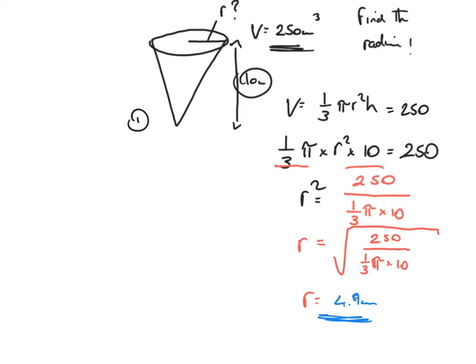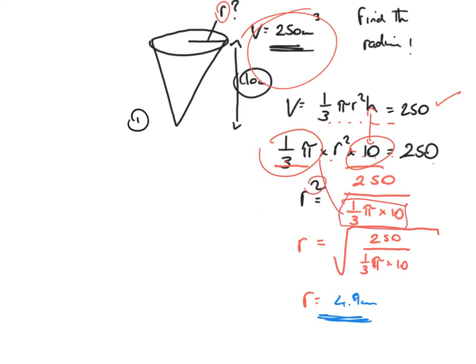Let's go over how that was achieved. The question provides the volume, which is 250, and asks for the radius. The volume formula is one third pi r squared h, equal to 250. Substituting height equals 10 gives one third pi times r squared times 10 equals 250. I divide both sides by one third pi times 10, then take the square root, entering it carefully into the calculator to get 4.9 centimetres.